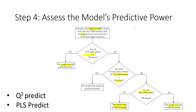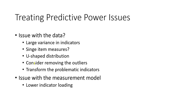What should we do if our model has low or no predictive power, and Q-square values are less than 0? We need to check two things. First, data issues: check if there is large variance in indicators, because values far from the mean yield low predictive power. Also check if single-item measures are used, or if there is a U-shaped distribution. We can consider removing outliers or transforming problematic indicators using logarithms to normalize them. Second, measurement model issues: low indicator loadings — even if AVE and reliability criteria are met — can also be a problem.